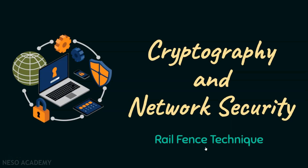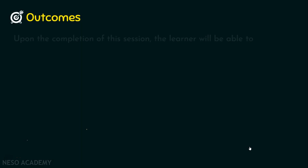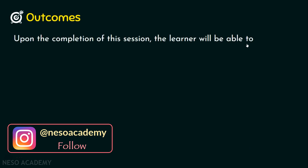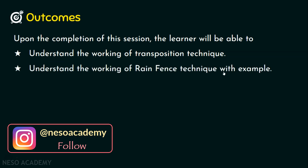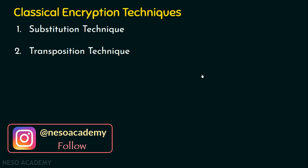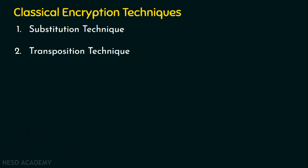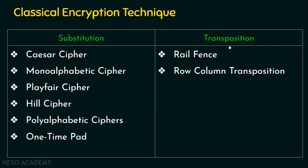Hello everyone, welcome back. In this presentation, we are going to focus on the rail fence technique. As usual, let's start the session with the outcomes. Upon completion of the session, the learner will be able to understand the working of transposition technique and the working of the rail fence technique with an example. We know that classical encryption technique consists of substitution technique and transposition technique. We have completed all the substitution techniques and now we are going to focus on the transposition technique.